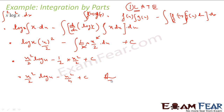And that answer is minus 1 — very simple. Just remember the ILATE formula, know which one is first and which is second. In this case ln(x) was first and x was second. So we write ln(x)·∫x dx minus ∫[d/dx(ln x)·∫x dx] dx, and solve it to get the answer.